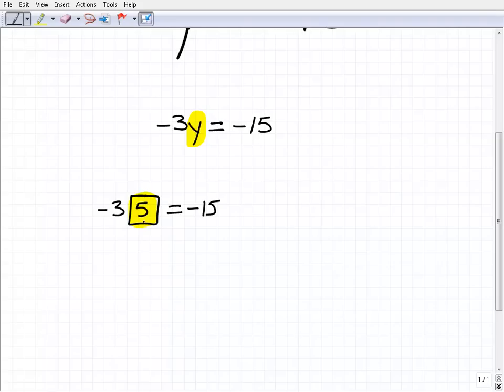So -3 times 5 is going to be our solution. Excuse me, 5 is going to be our solution because -3 times 5 is equal to -15. So mentally on these real easy equations, that's how you want to think about it. But here we have to start learning the steps to solve this equation. So -3 times y or -3y equals -15.